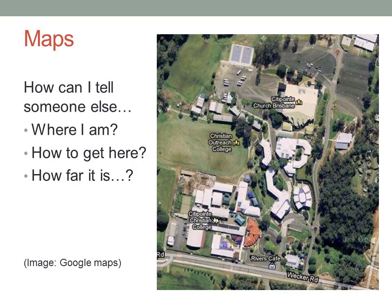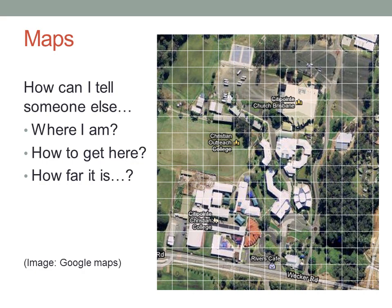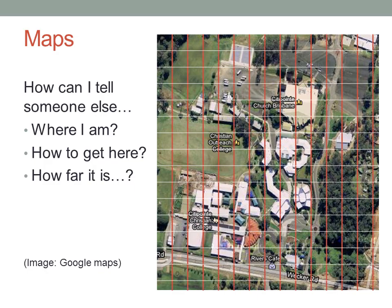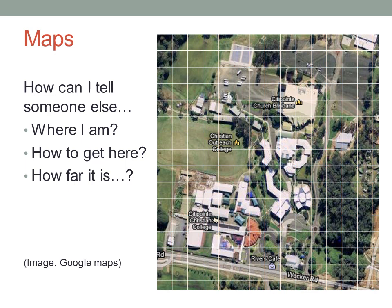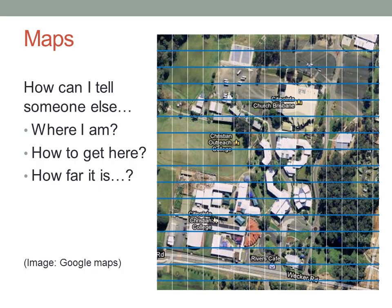So what mapmakers do is lay a grid across the map. The vertical lines are called eastings — they tell you how many squares east you are from some fixed reference point. And the horizontal lines are called northings — they tell you how many squares you are north from the reference point.